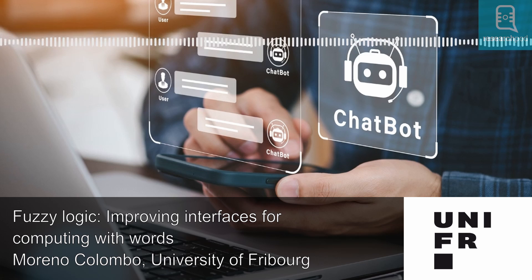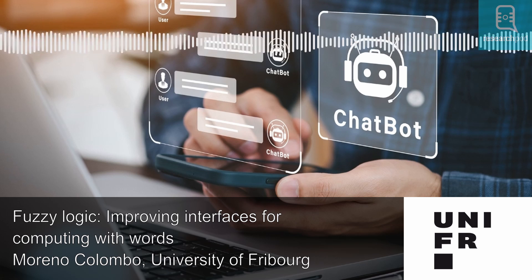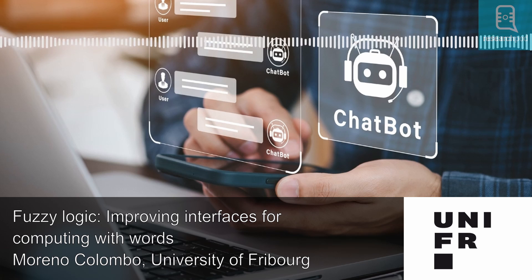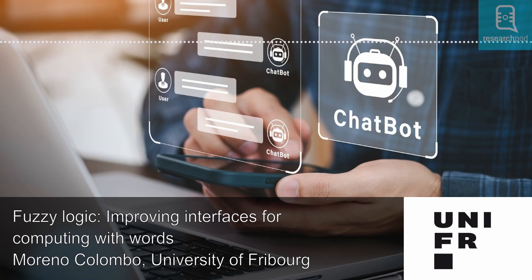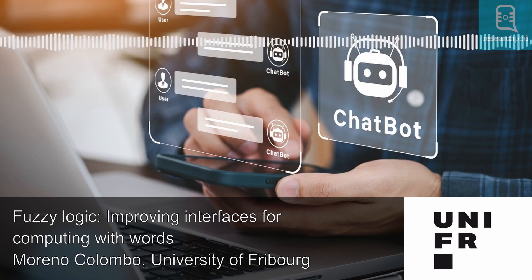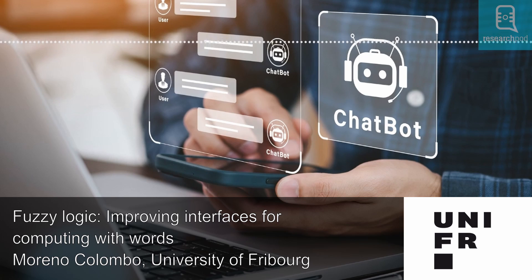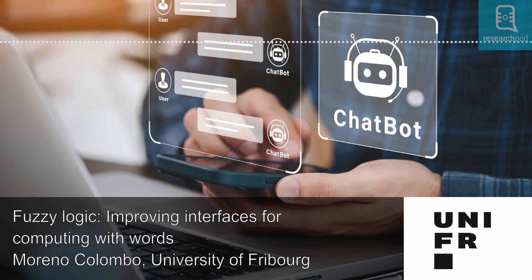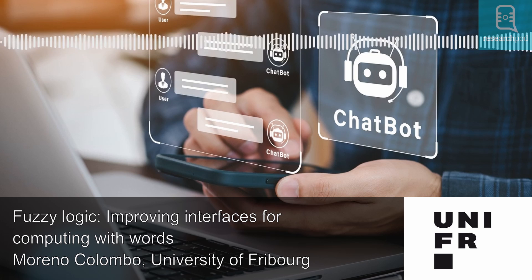Human beings are social animals, meaning they need to interact with others in their everyday life. An interaction can be defined as an exchange of information between two or more actors, and different types of interaction exist depending on the nature of the involved actors. The interaction between biological systems refers to how different natural actors pursue a common goal — for example, how people interact with the environment or with others in conversation, using both words and body language.